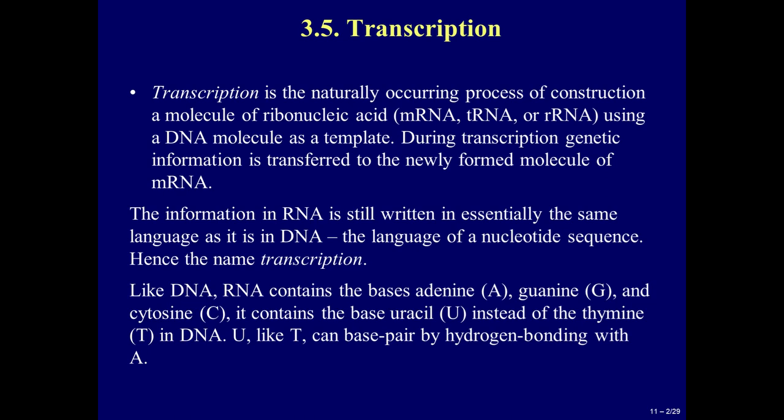Like DNA, RNA contains the bases adenine, guanine and cytosine. It contains the base uracil instead of thymine in DNA. U, like T, can base pair by hydrogen bonding with A.